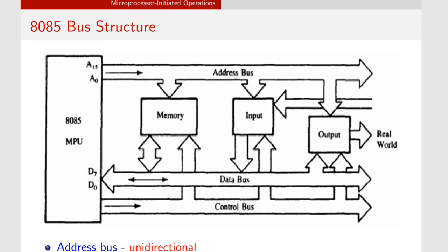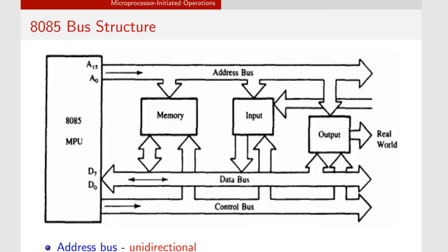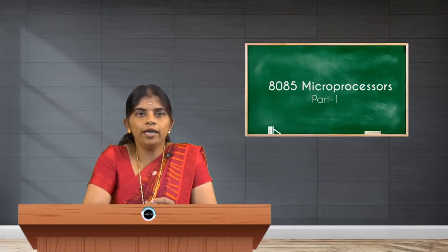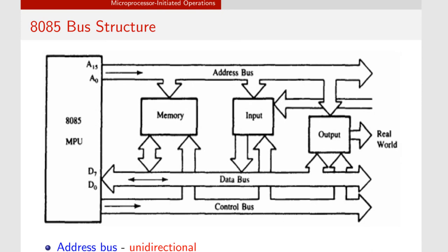The address bus, as seen in the diagram, is labeled A0 through A15, so it is 16 bits wide. It goes from the microprocessor to the peripheral or memory, making it unidirectional. The data bus, labeled D0 through D7, is an 8-bit bus. The data bus can transfer data between memory or I/O devices and the processor in both directions, so it is bidirectional. The control bus consists of lines used to control the entire operation and also goes from the processor to memory or I/O devices.